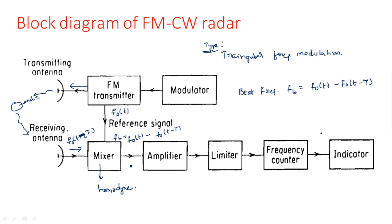The time delay τ is the delay between the transmitted and received signals. After mixing, the beat frequency signal is amplified, passed through a limiter, and then through a frequency counter. The frequency counter counts the number of cycles to determine the range frequency and Doppler frequency, and an indicator displays the resulting range or velocity.